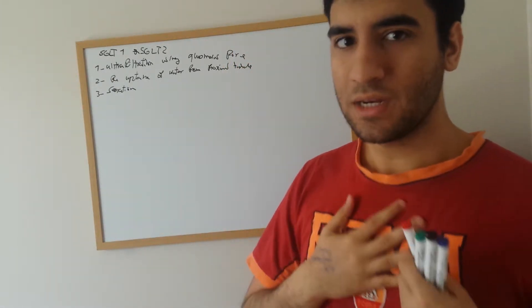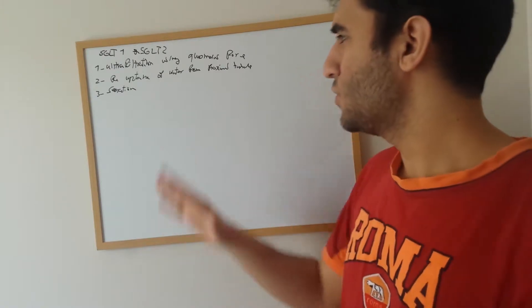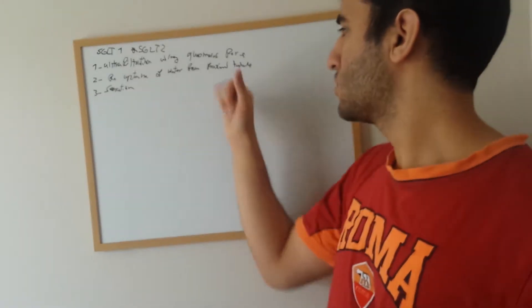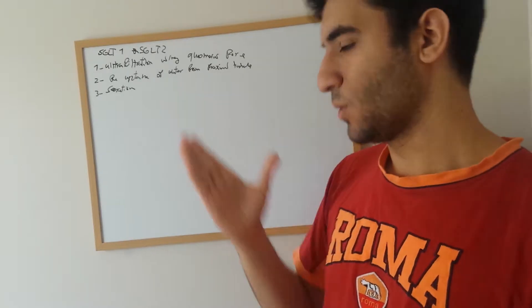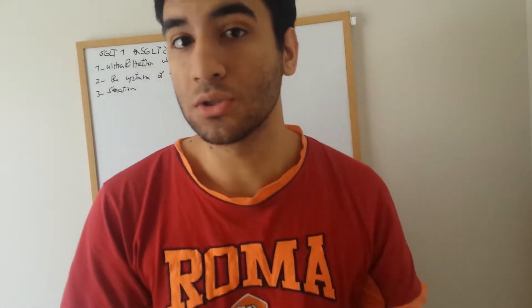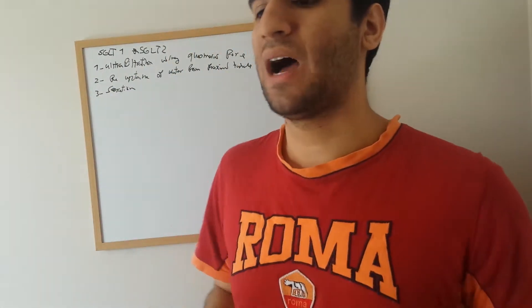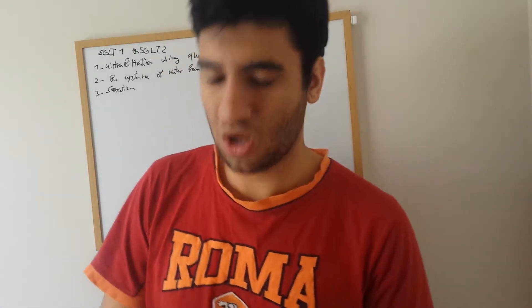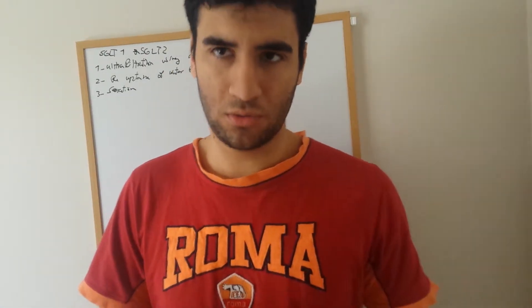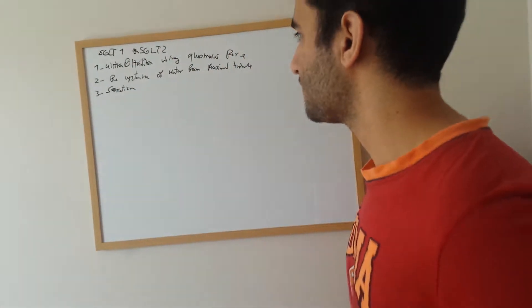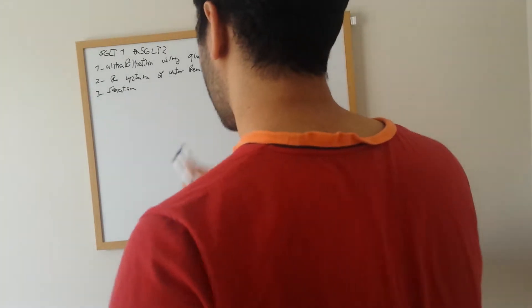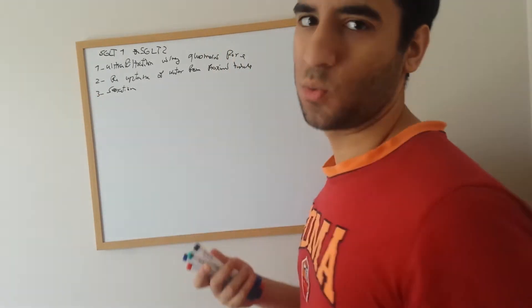We are still losing a lot of solutes and glucose that we need. So in the proximal tubule, the body re-uptakes water and especially glucose, because we don't want to lose glucose through secretion — we can use that glucose to produce a lot of energy.